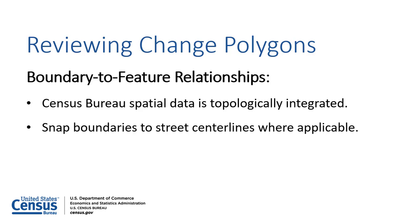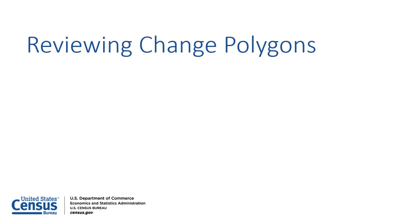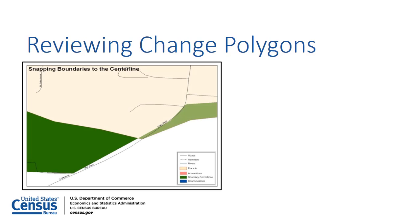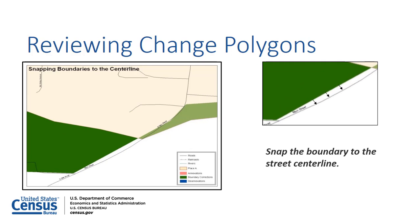Participants should snap boundaries to street centerlines where applicable. This will help establish a more accurate housing and population count for governments. In this example, there is a less than 30-foot gap between the green boundary correction and the road centerline. In these instances, participants should snap the boundary change to the street centerline; otherwise, the population might be assigned to the incorrect government.